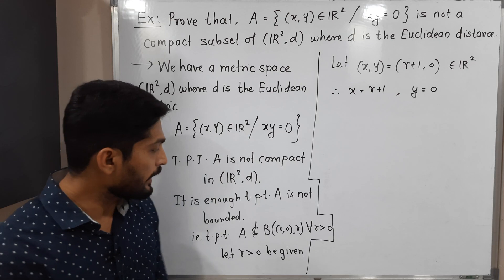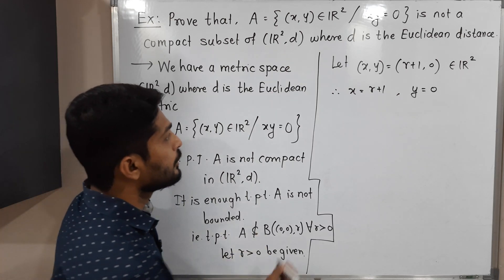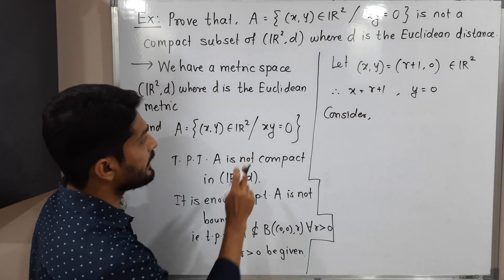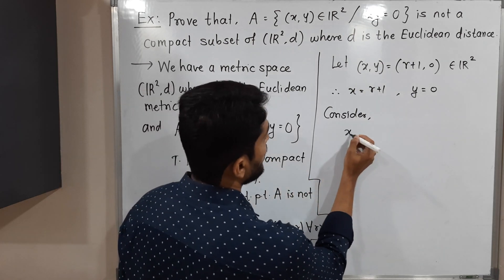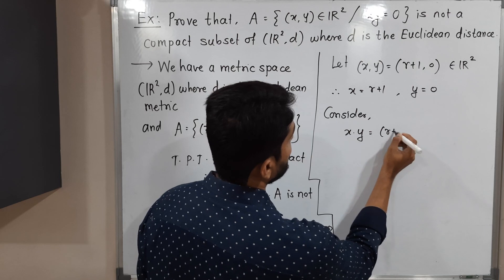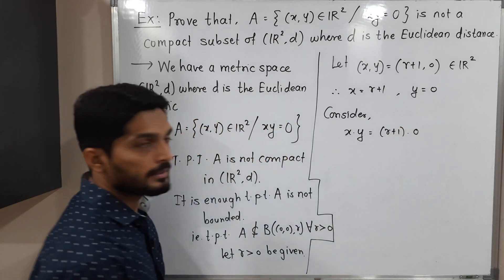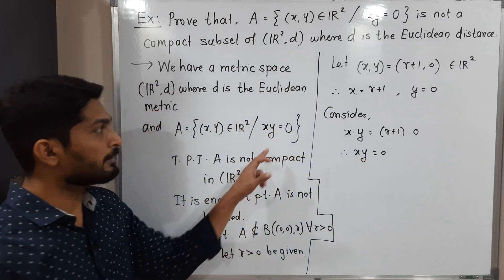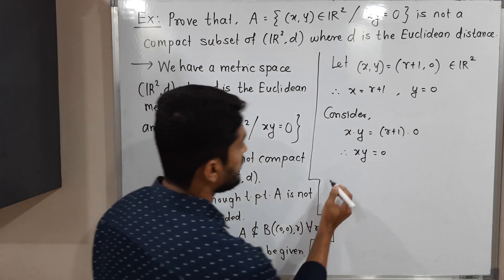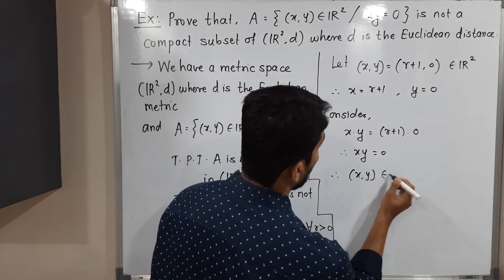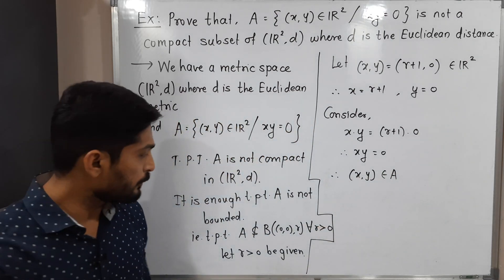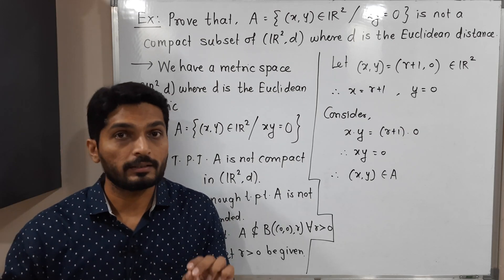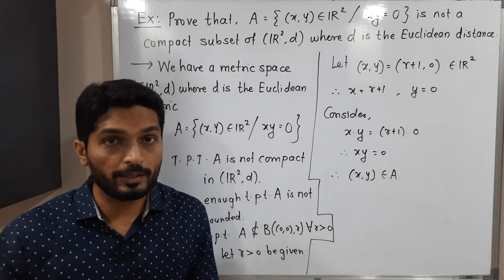We have to prove that this point lies in A but not in the ball. Consider x·y = (R+1)·0 = 0. Therefore x·y = 0, so the given point satisfies the condition of A. Therefore (x, y) = (R+1, 0) belongs to A.